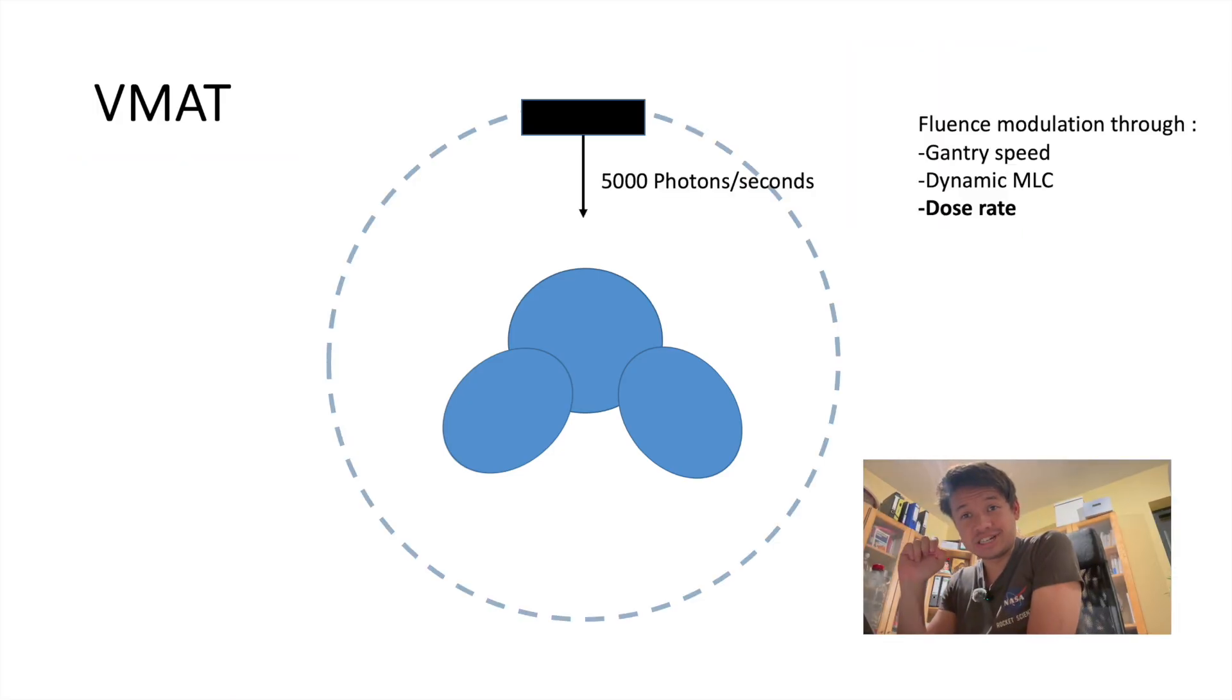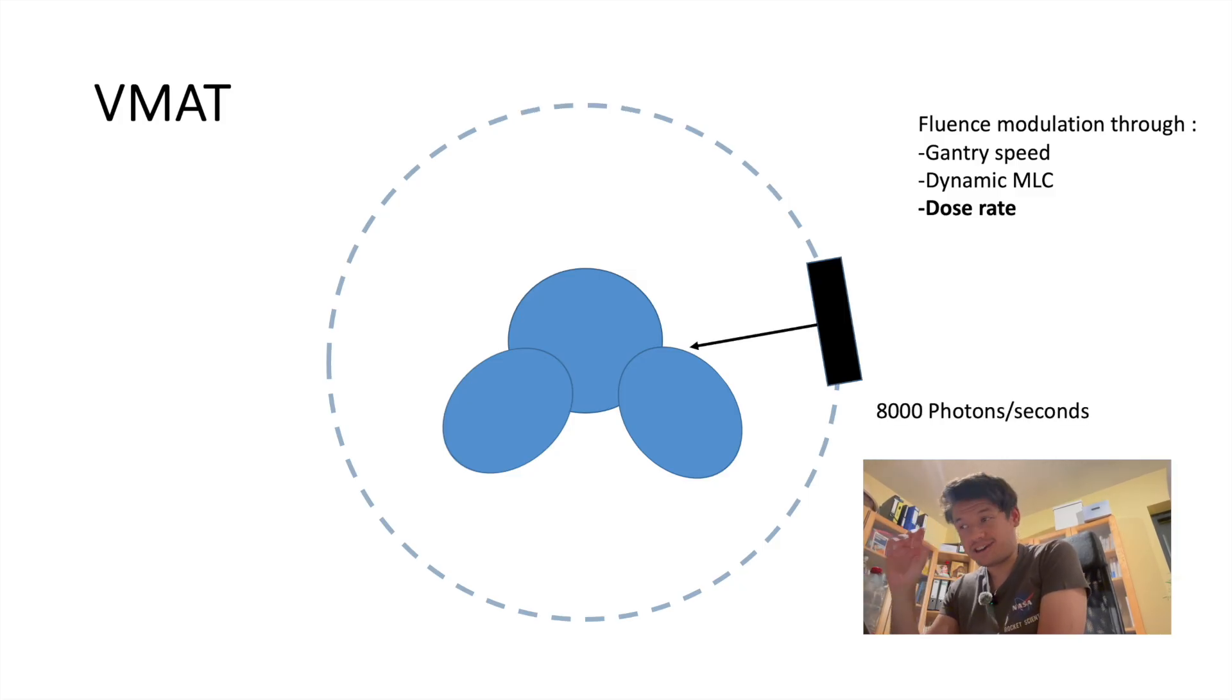The third parameter is the dose weight. The machine can vary the number of photons delivered per second at different points along the arc. For example, here we have 5000 photons per second and here we have 8000 photons per second, depending on the dose required in that area. These numbers are just for illustration.